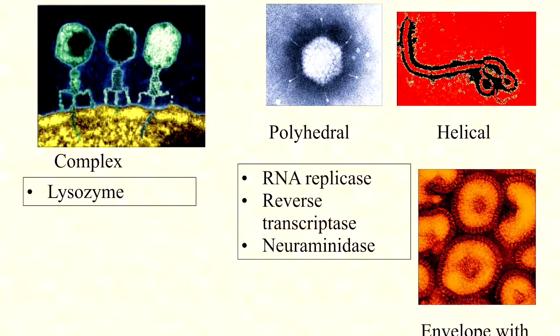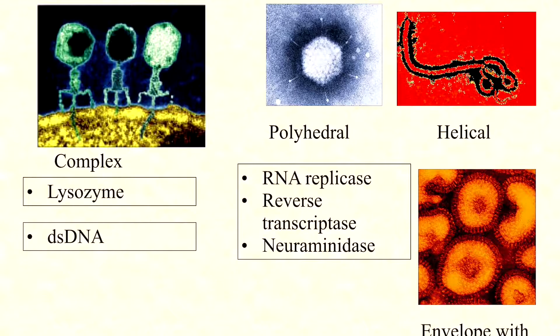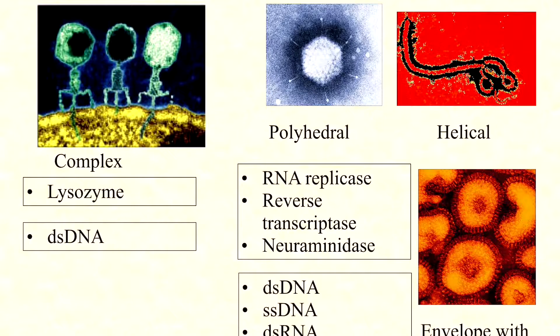Many human viruses carry neuraminidases, like the influenza viruses, that allow them to chew their way in and out past extracellular matrices that protect many of our tissues. Their genomes are also different: phage genomes are almost always double-stranded DNA, whereas human virus genomes can be double- or single-stranded DNA, or double- or single-stranded RNA.